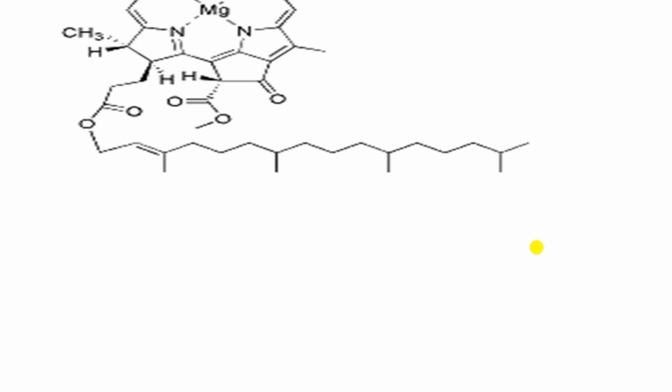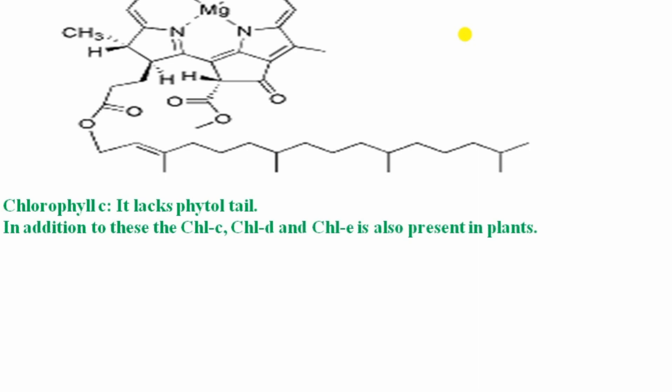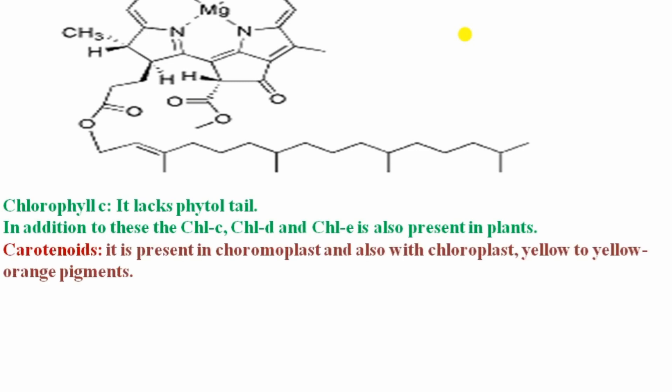Chlorophyll b has the molecular formula C₅₅H₇₀O₆N₄Mg and is a yellow-green pigment. The difference from chlorophyll a is the CHO group at position 3 of the second pyrrole ring instead of CH₃, which is why it has 2 fewer H atoms and 1 more oxygen. Chlorophyll c, d, and e are also present in plants.